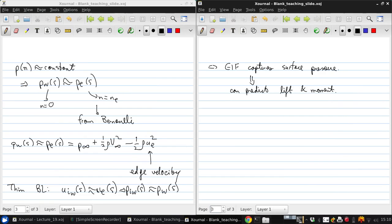So this displacement effect basically wedges the outer flow away from the wall.